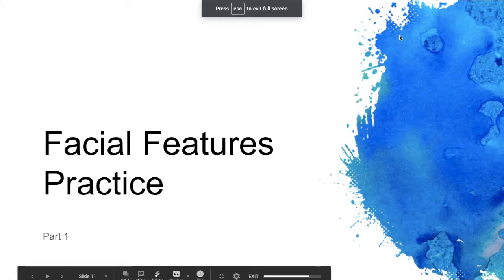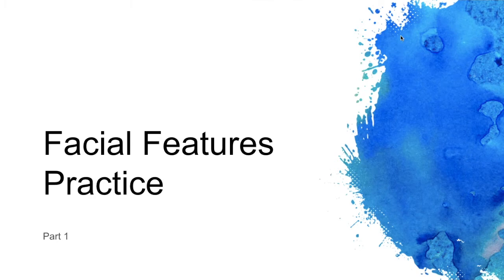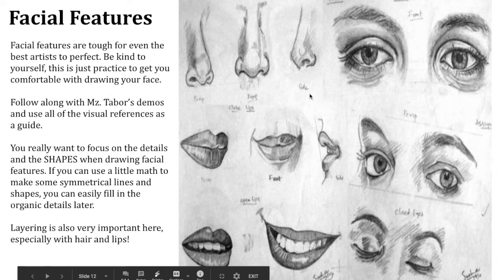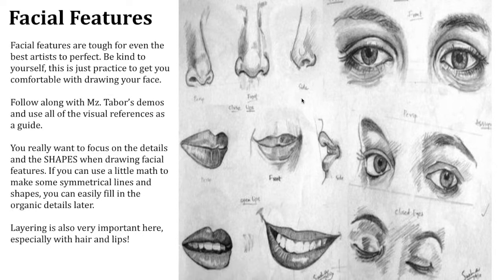Welcome to tutorial number one in the self-portrait process journal. The first step is facial features practice. Facial features are tough to master and there's always things that can be improved on, but I really want you to focus on the shapes and the little tiny highlights and details. Shape is most important, and I will probably say this quite a few times throughout these videos — shape is really important here.